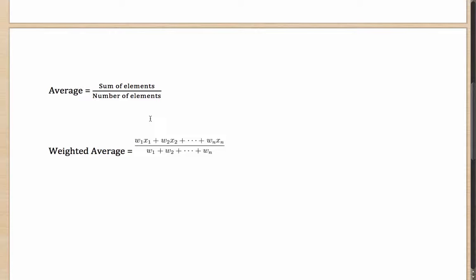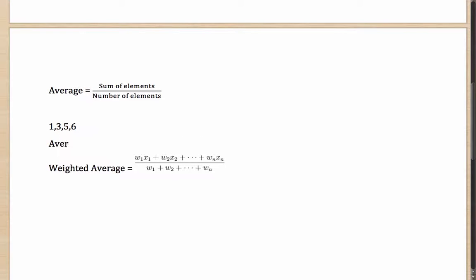To begin with, what exactly is the average? Average is nothing else but if you sum all the elements and divide by the number of elements, what you get is the average. For example, if you have 1, 3, 5, 6, then their average is 1 plus 3 plus 5 plus 6 divided by 4. That gives 15 by 4, so the average comes out as 3.75.